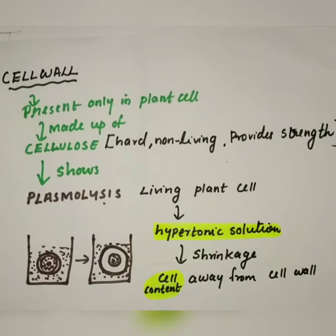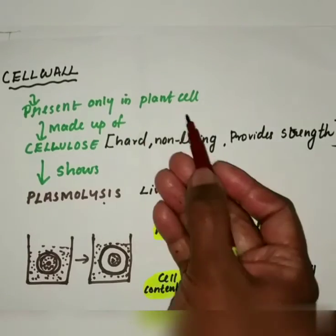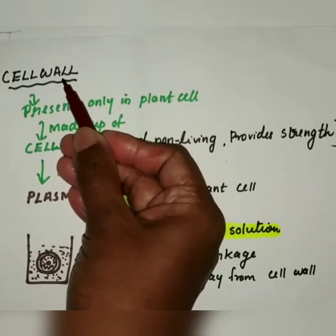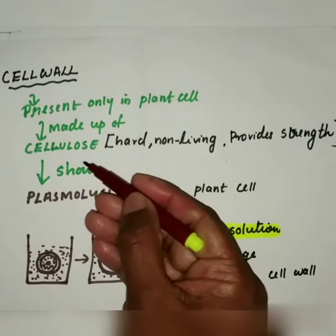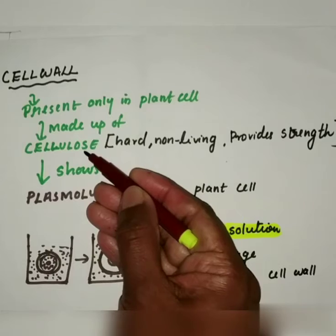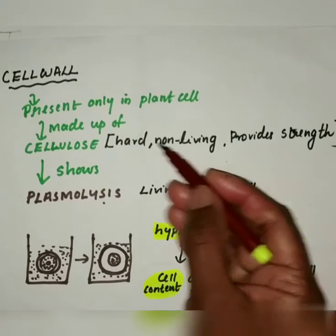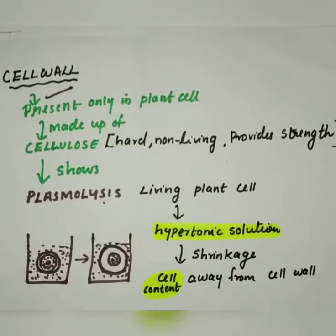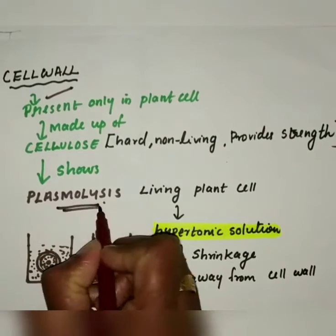The cell wall is present only in plant cells and is the outermost covering of the plant cell. Below the cell wall in plants is the cell membrane. The cell wall is made up of a harder substance called cellulose, which is non-living. The main function of the cell wall is to provide strength to the plant. Plant cells show a process called plasmolysis.